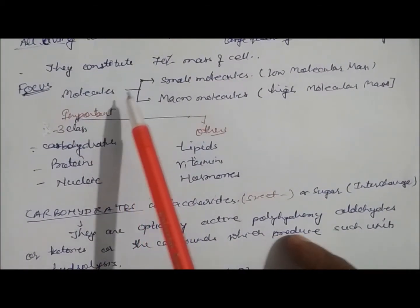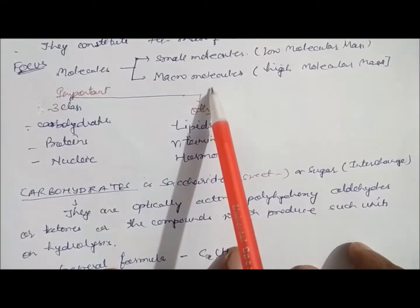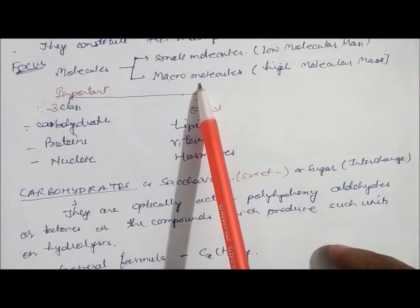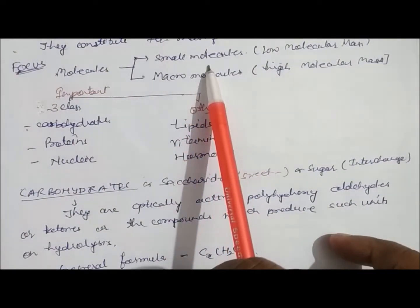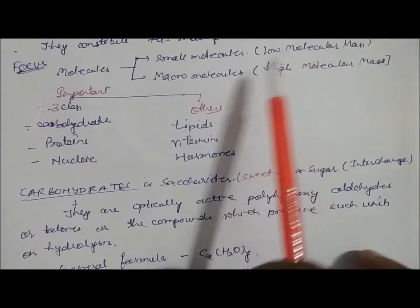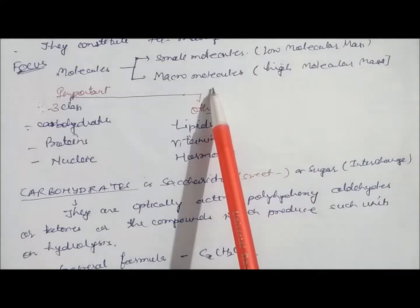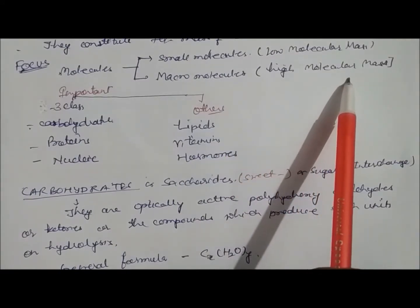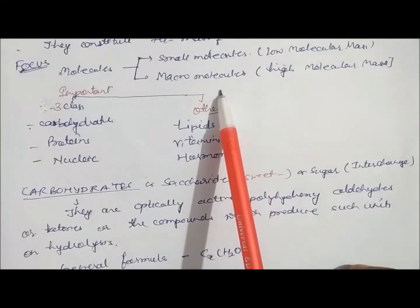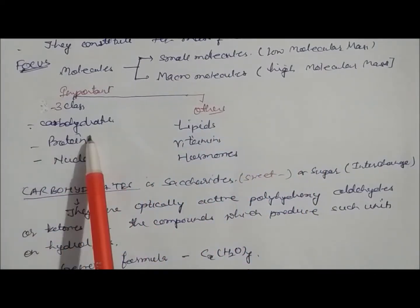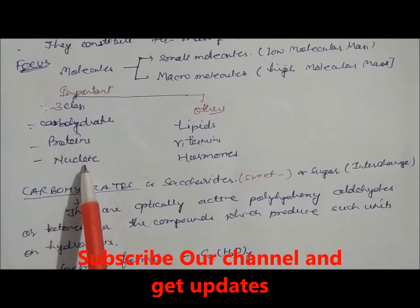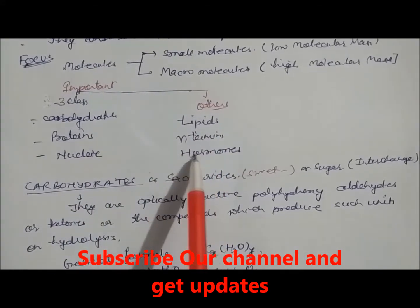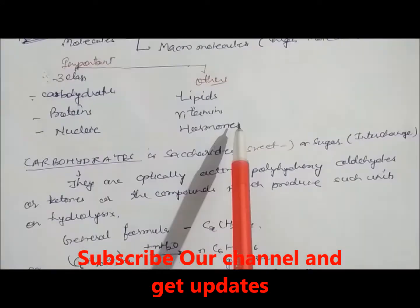We need to focus on two types of molecules: small molecules and macromolecules. Small molecules have low molecular mass, while macromolecules have high molecular mass. Macromolecules are further divided into two parts: carbohydrates, proteins, and nucleic acids on one hand, and lipids, vitamins, and hormones on the other.